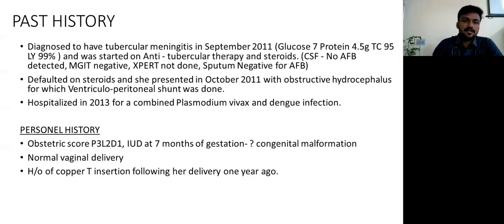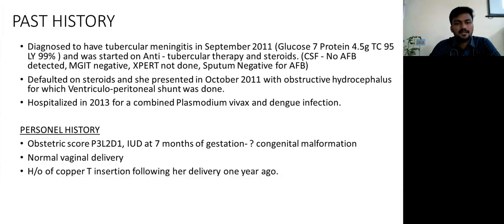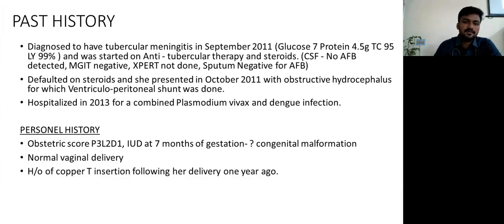Past history: she was diagnosed with TB meningitis in September 2011. At that time, CSF showed glucose of 7 and protein of 4.5 grams, total counts of 95 with lymphocytic predominance of 99%. She was started on ATT and steroids. There was no microbiological evidence detected — NAAT was negative, expert was not done, and sputum was negative. She didn't take steroids and presented after one month with worsening headache; CT showed obstructive hydrocephalus, for which she underwent emergency VP shunt insertion.